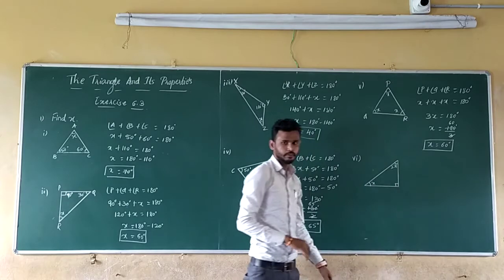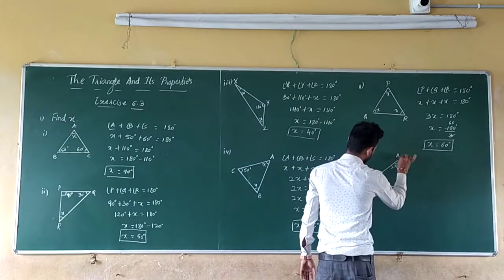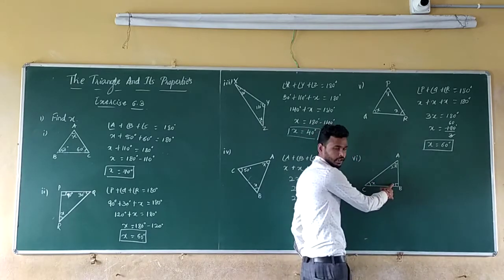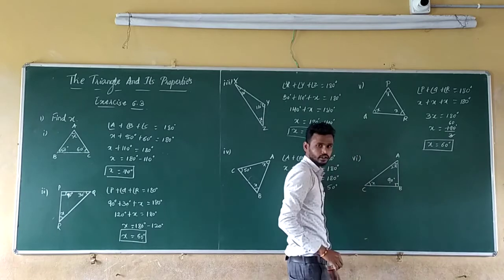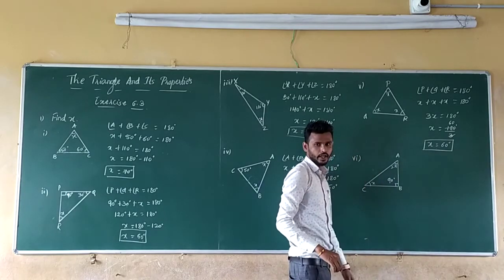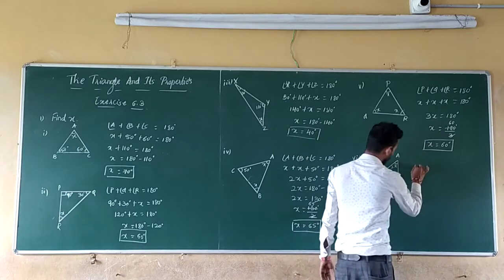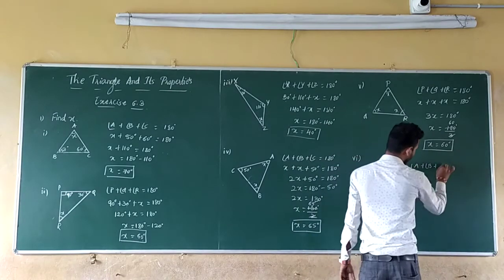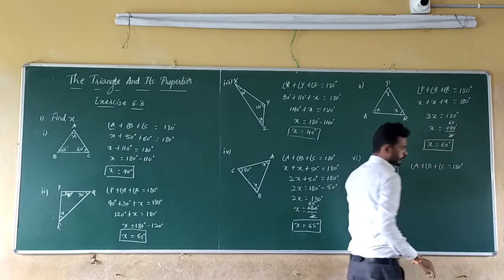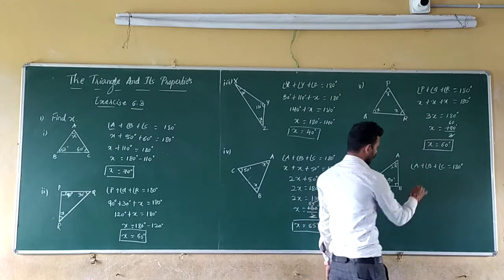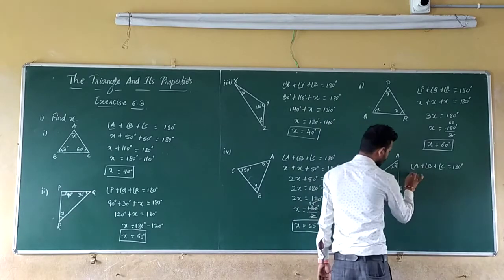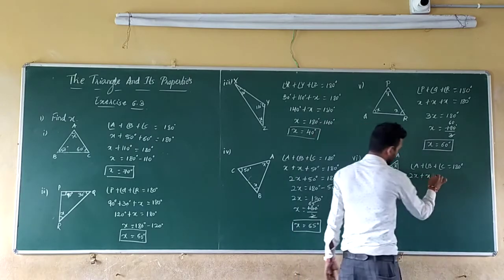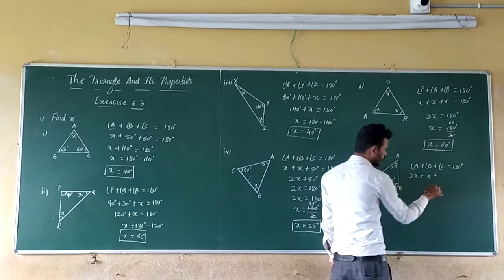Okay, here we have named the triangle. I will name this one as triangle ABC. One angle is 90 degrees. So now the sum of angles of a triangle is 180 degrees. So what we can write: Angle A plus angle B plus angle C, which is equal to 180 degrees. Angle A is 2X, plus angle B is X, plus angle C is 90 degrees.